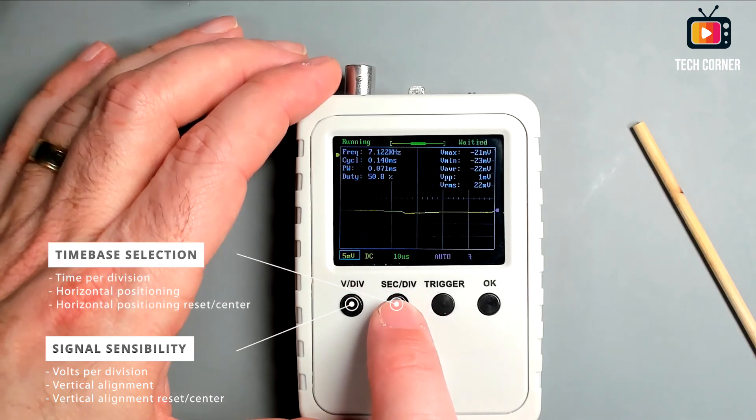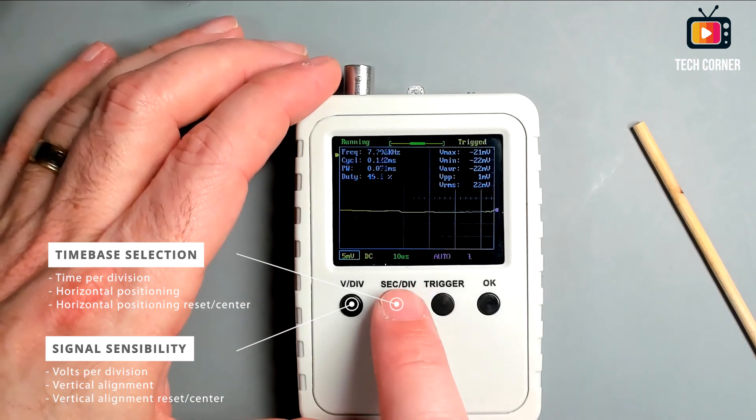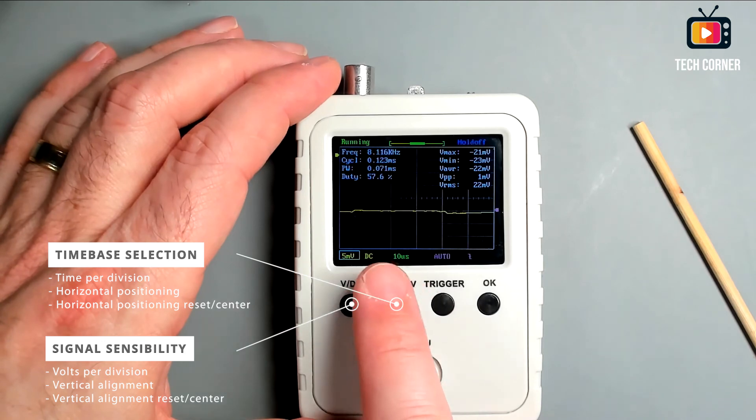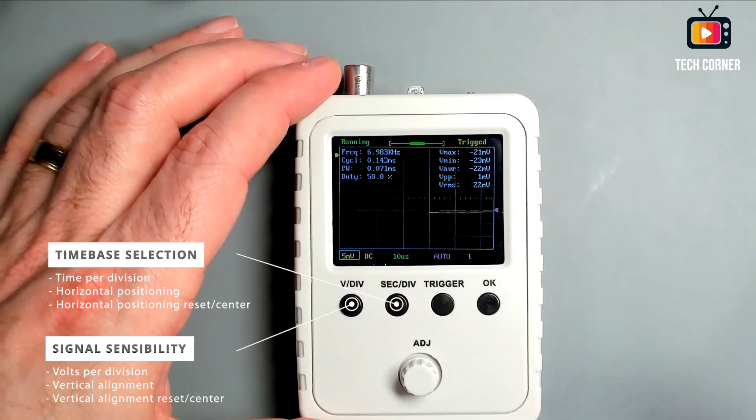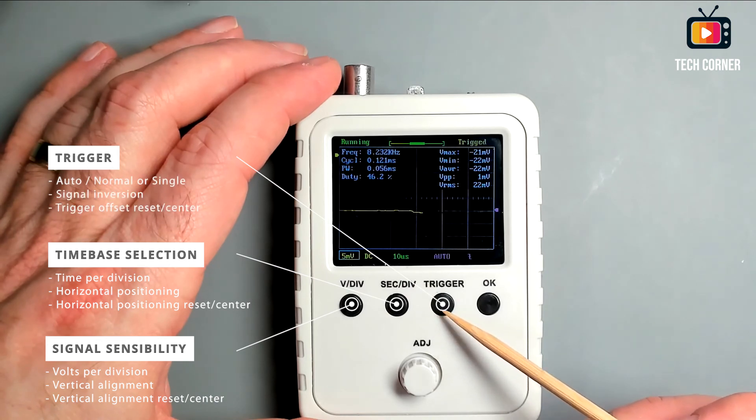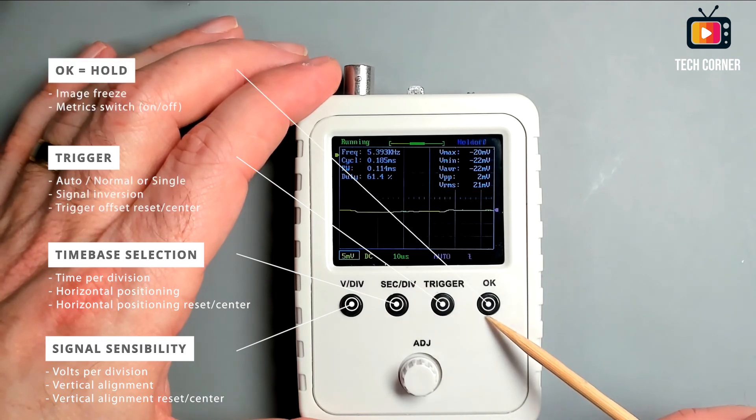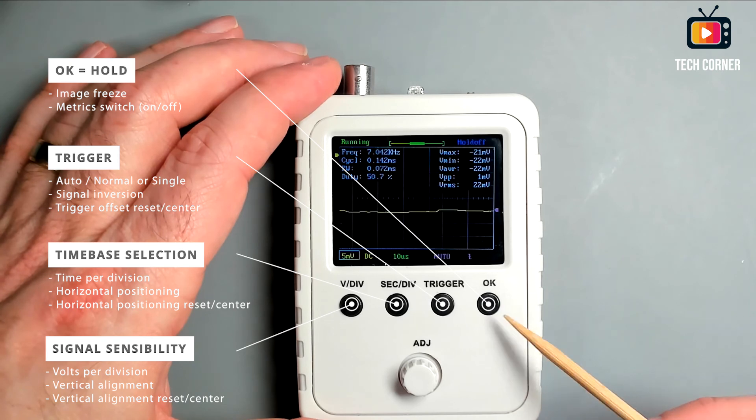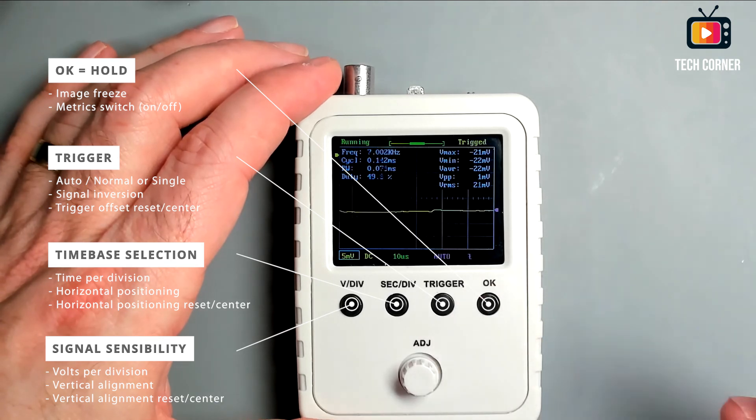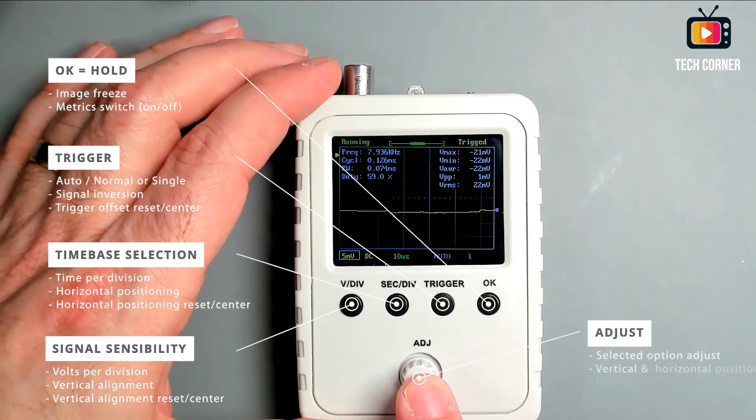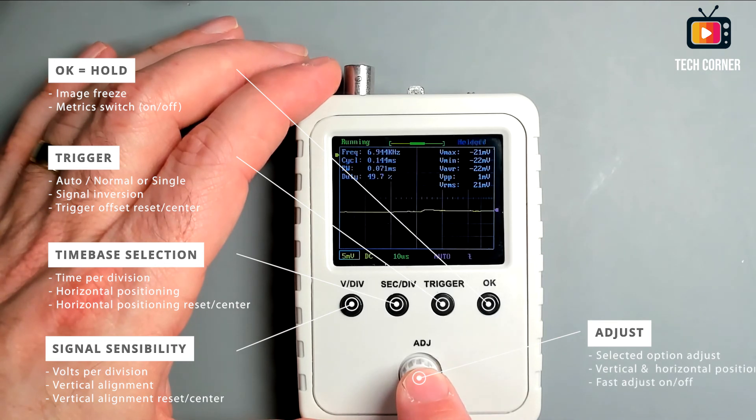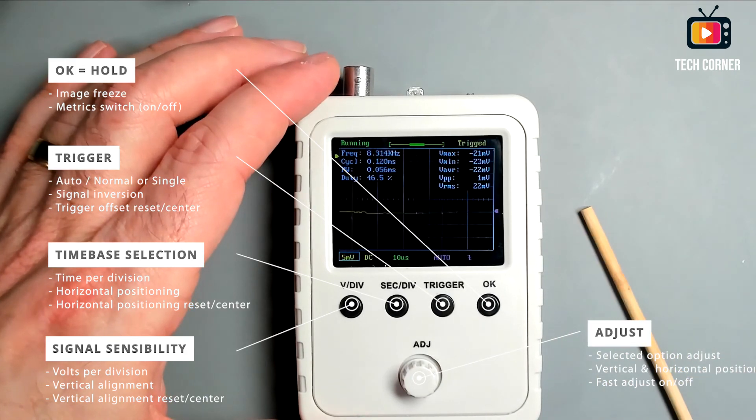The second button is the horizontal alignment button. And also the button we use to select the time base or the time per division for each of these squares. So we can see here in the display. Next is the trigger button. And finally the OK button that has several functions. One of them is the hold function that freezes the screen so we can easily read and analyze the information.